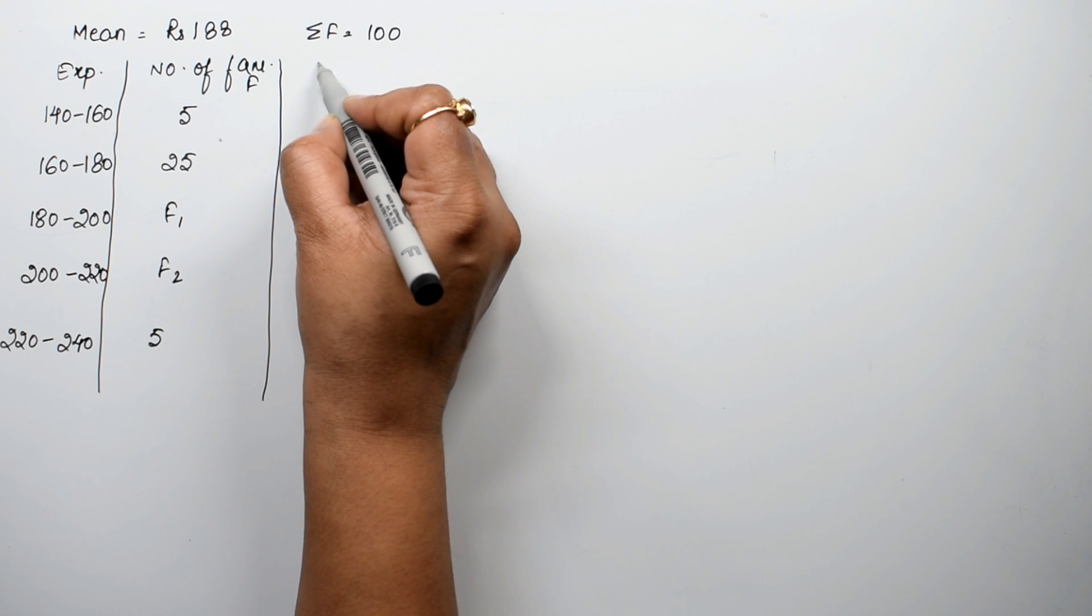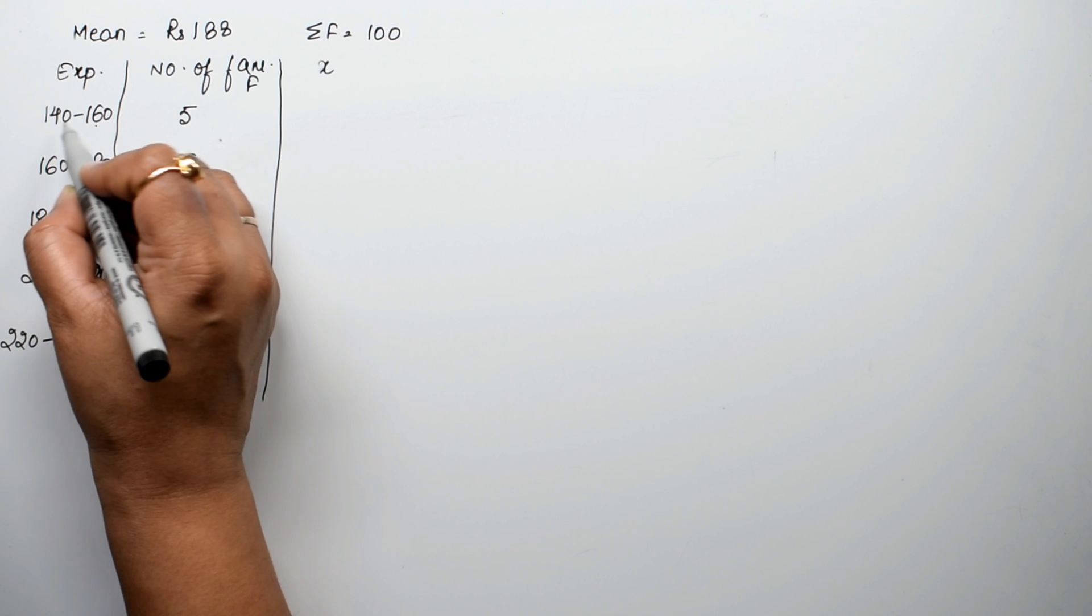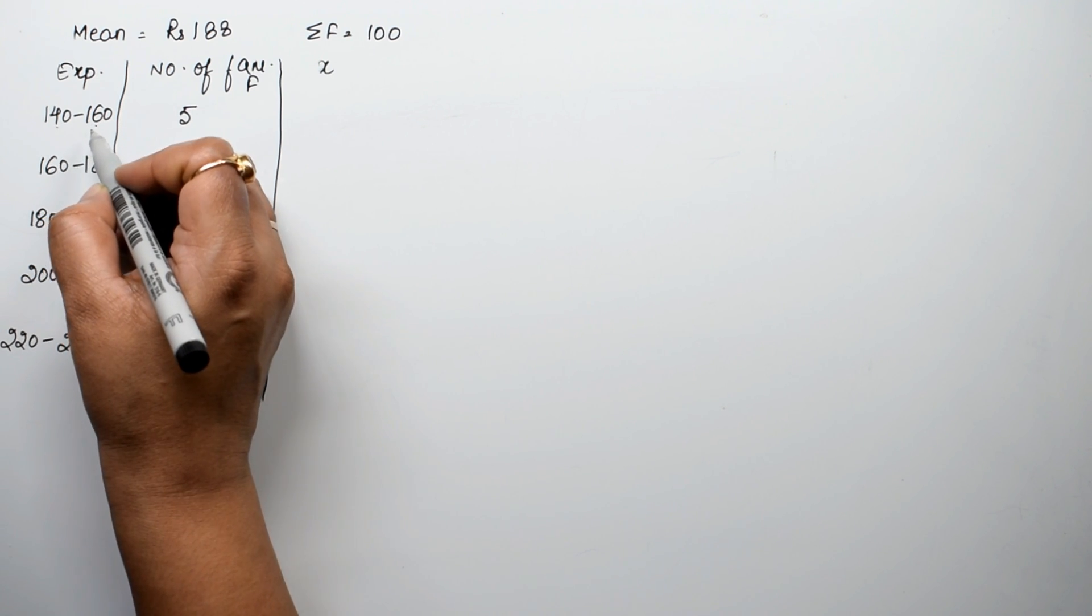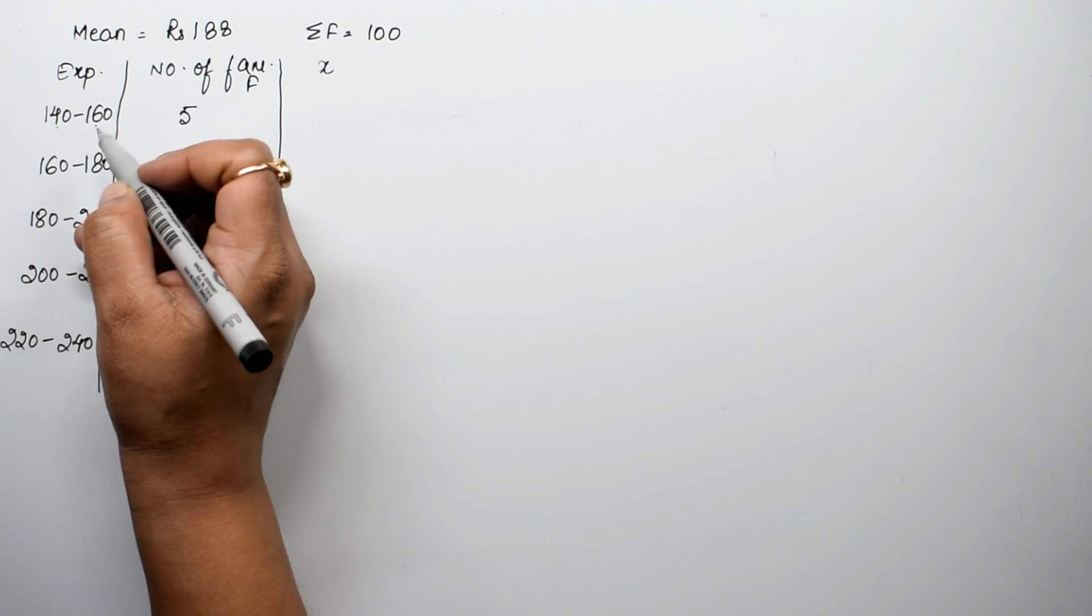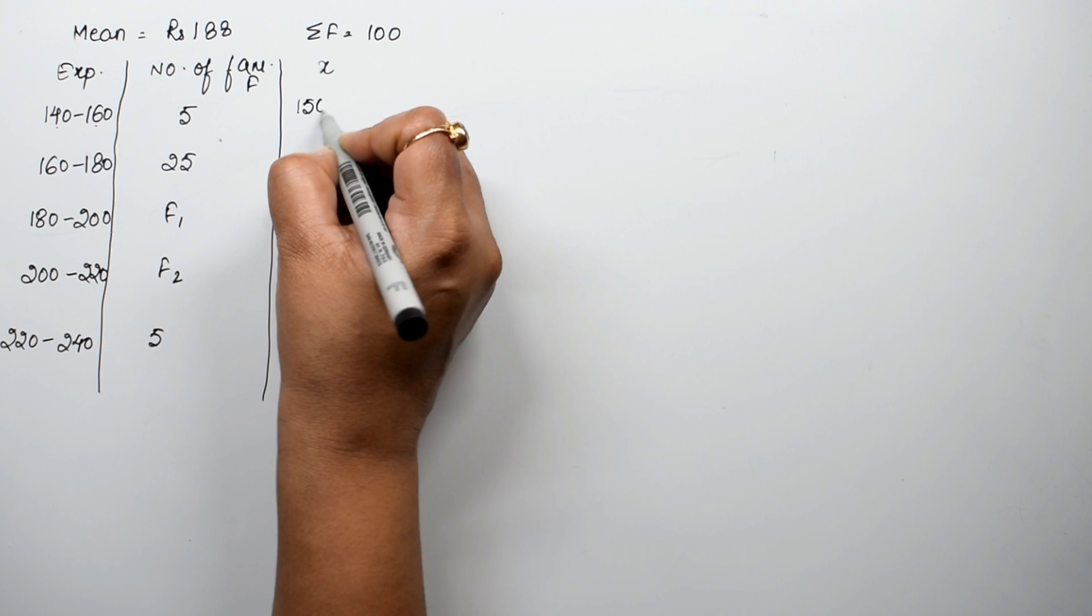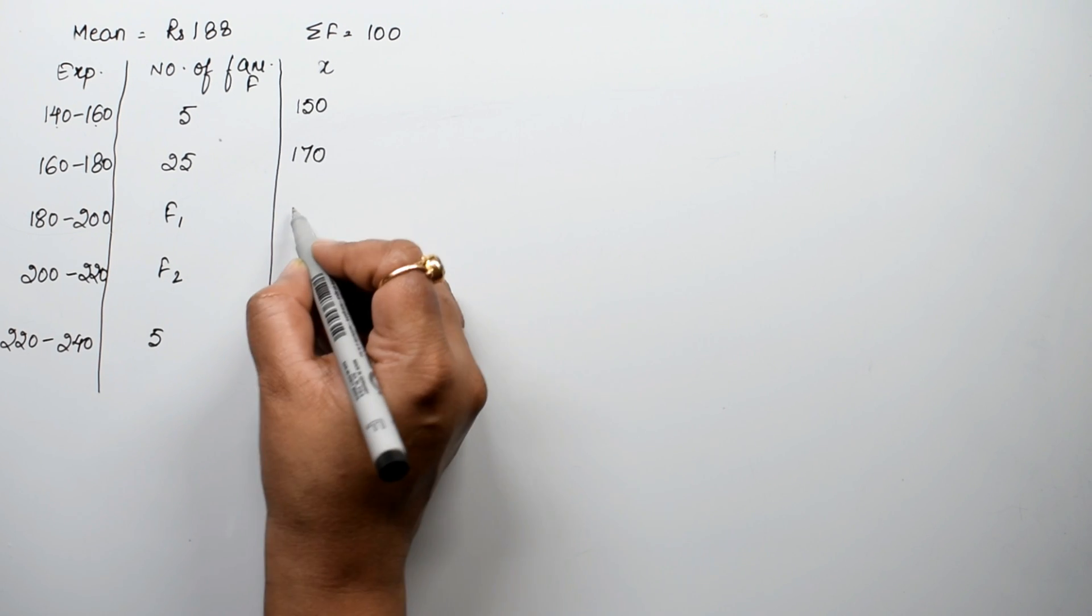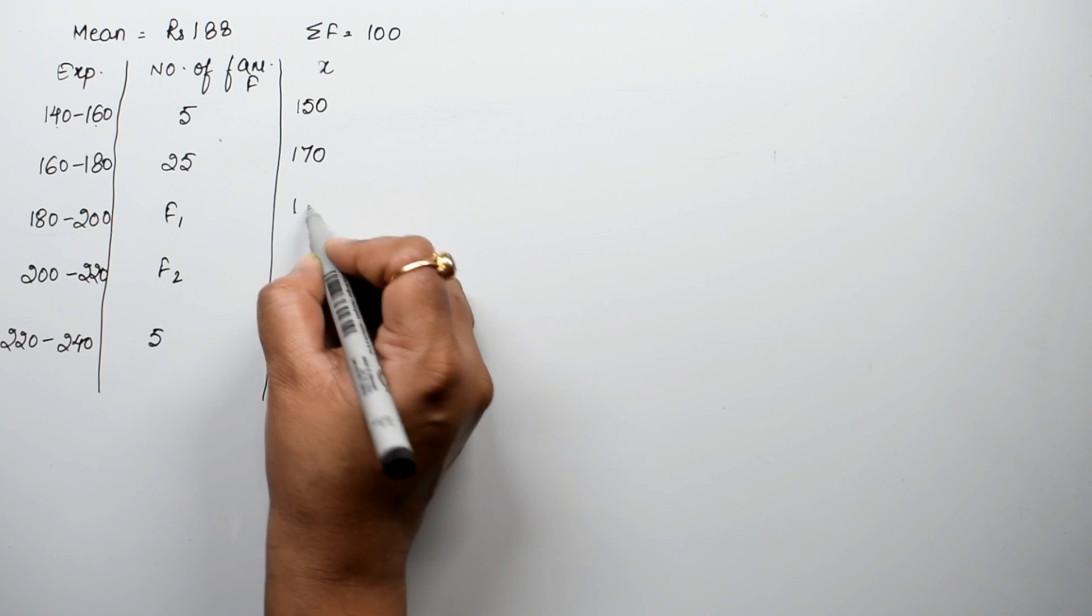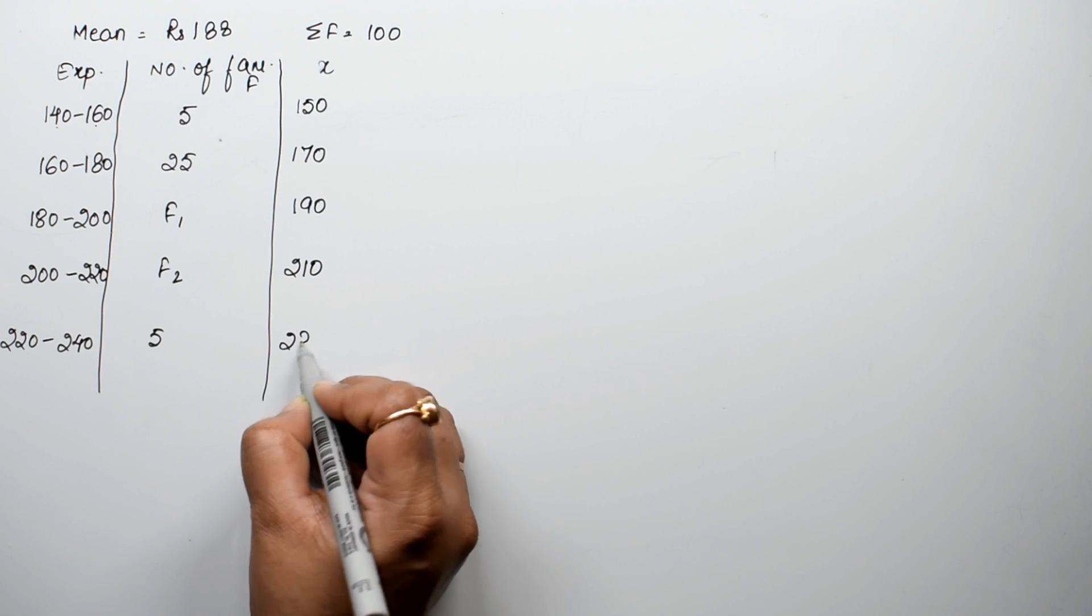First, we find the mid-value x. The upper limit plus lower limit divided by 2 gives us 150, 170, 190, 210, and 230.